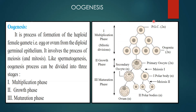The primordial germ cell undergoes mitotic divisions to get two cells, then again undergoes mitotic division to get four diploid oogonia. Then it enters the growth phase and maturation phase. In the growth phase, one of the four oogonia develops into the primary oocyte. This primary oocyte undergoes meiosis I, forming a secondary oocyte which is haploid, and one polar body — also haploid. Both then go through meiosis II in the maturation phase, forming one ovum and three polar bodies.